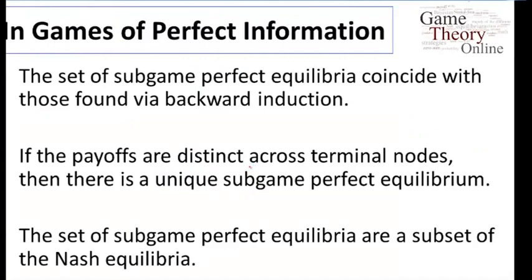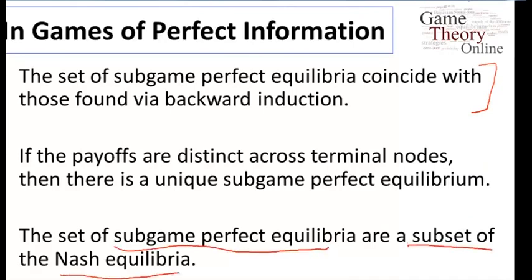What do we know about games of perfect information and sub-game perfect equilibrium? Some nice things are true. First, the set of sub-game perfect equilibria coincides with those found via backward induction — so running the backward induction algorithm is a way of locating sub-game perfect equilibria in games of perfect information. If the payoffs are distinct across terminal nodes so that players are never indifferent, there is a unique sub-game perfect equilibrium, found by the unique backward induction solution. More generally, the set of sub-game perfect equilibria is always a subset of the set of Nash equilibria, and in some games — like the one we just saw — it is a strict subset.